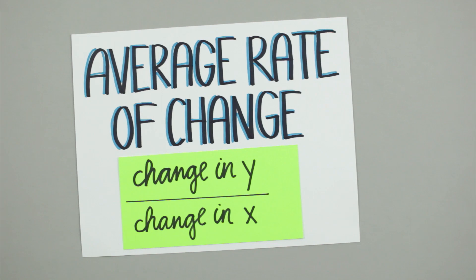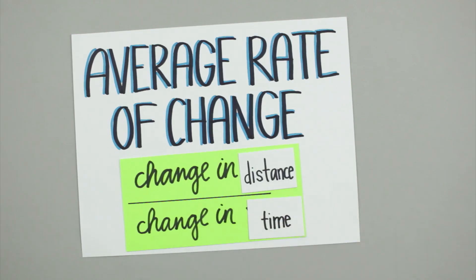A lot of discussions about average rate of change relate to speed, and in that case, the average rate of change represents the total distance covered over a certain amount of time. But really, we can talk about any change in y over any change in x, regardless of what x and y represent.